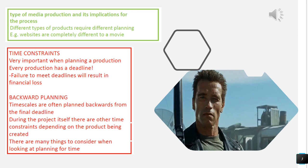Different types of products are going to require different planning. If you are doing a film, you're going to have to do all sorts of pre-production — storyboards, concept art, casting, a big pre-production schedule, call sheets, and all sorts of different work. But if you're going to do a website, a comic book, or a magazine, things are obviously going to be completely different. The type of production can have a big implication on the process.